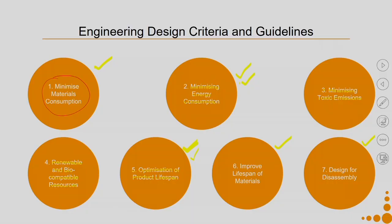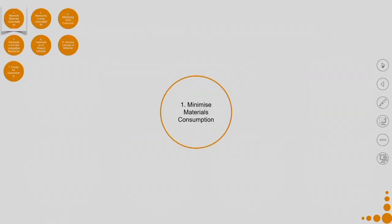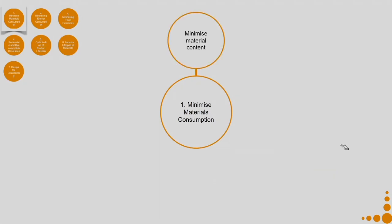Let us see how we go ahead with these engineering design criteria and guidelines. Let us talk about minimizing material consumption. The first step is to minimize material content, then minimize scraps and discards.